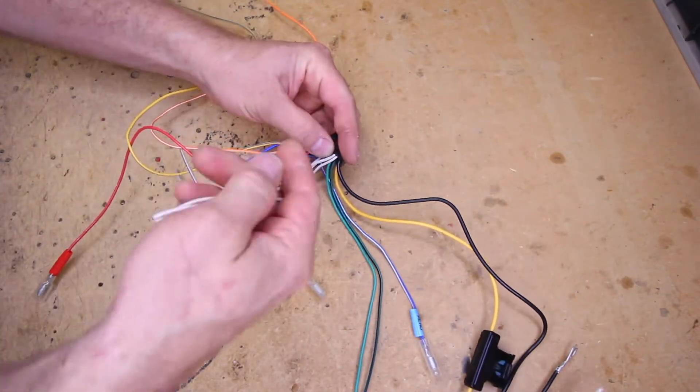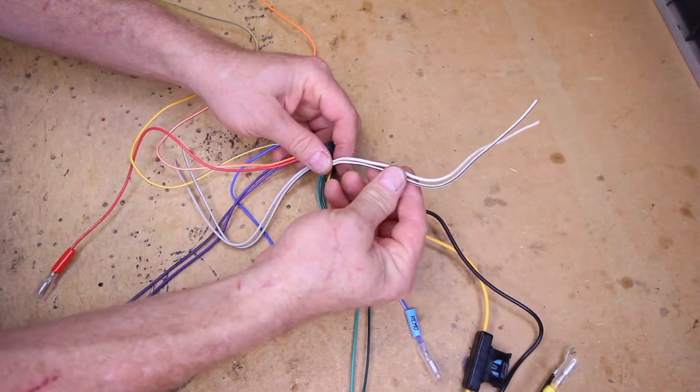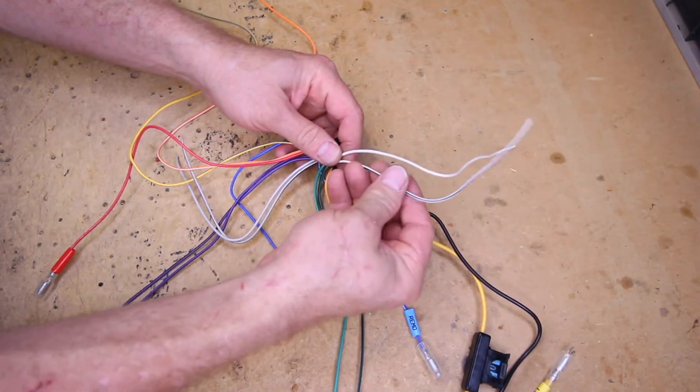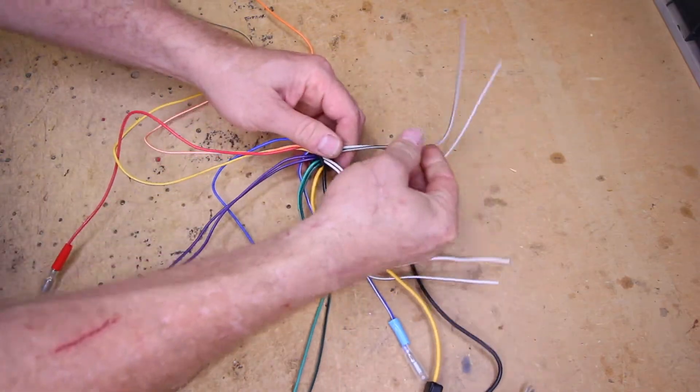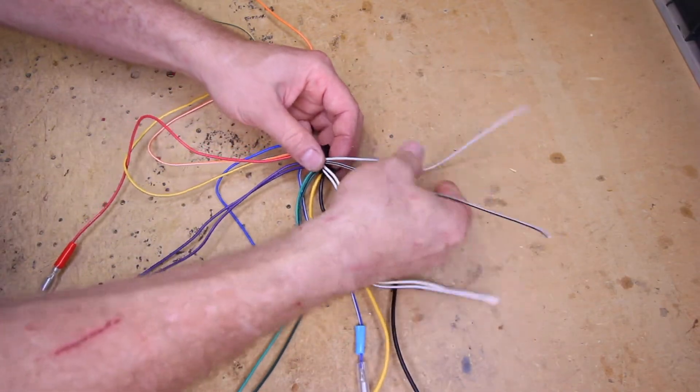Then you have your whites, which we like to call number one, which is the driver's front. There again, solid white, white with a black stripe. White with a black stripe is negative. Gray, which is what we call number two. Black stripe is negative.